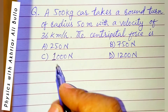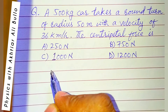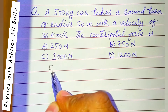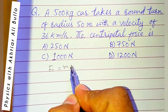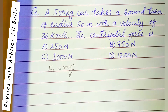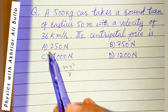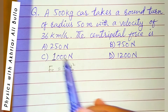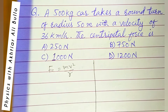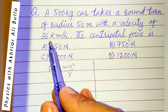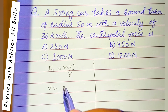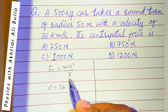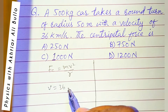To calculate centripetal force, we will use the formula: centripetal force is equal to mv² divided by R. First of all, we will convert velocity into meters per second. V is given as 36 km per hour.